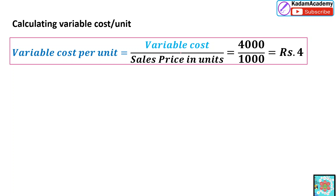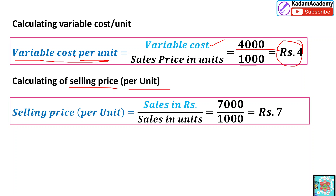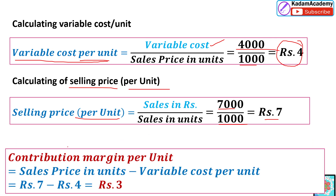To calculate variable cost per unit: variable cost is given as 4,000 rupees and sales in units is 1,000, so variable cost per unit = 4,000 / 1,000 = 4 rupees per unit. Next, selling price per unit: sales in rupees is 7,000 and sales in units is 1,000, so selling price per unit = 7,000 / 1,000 = 7 rupees per unit.